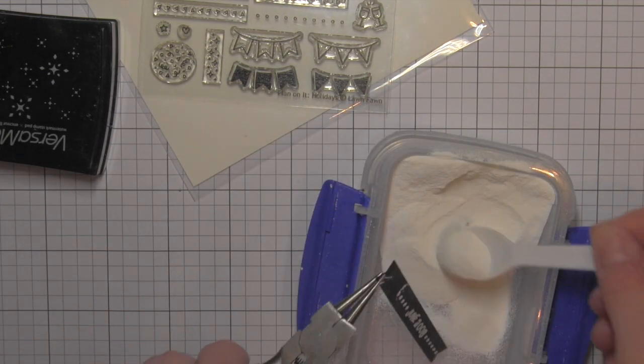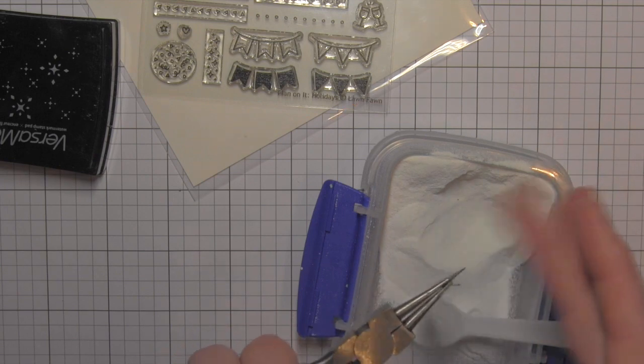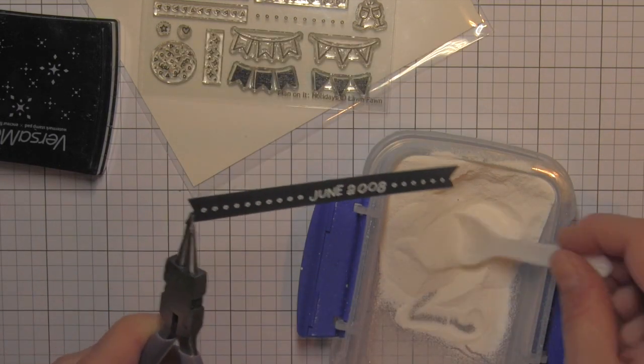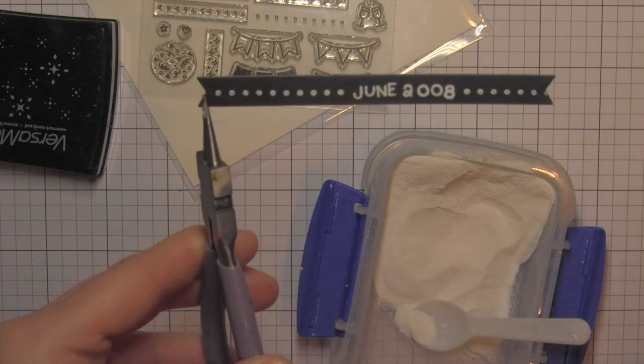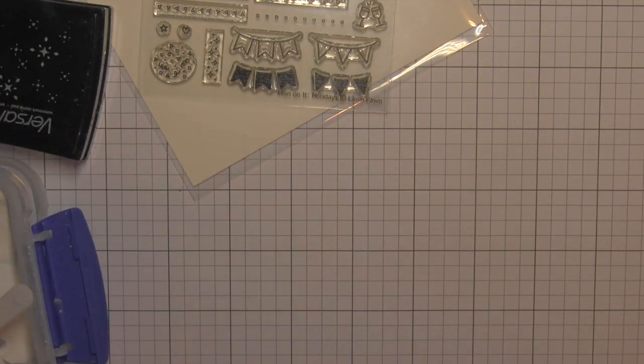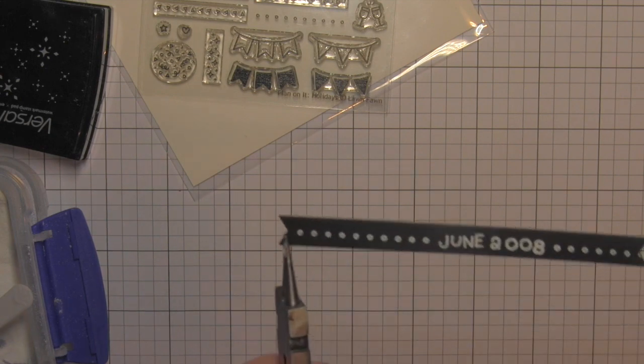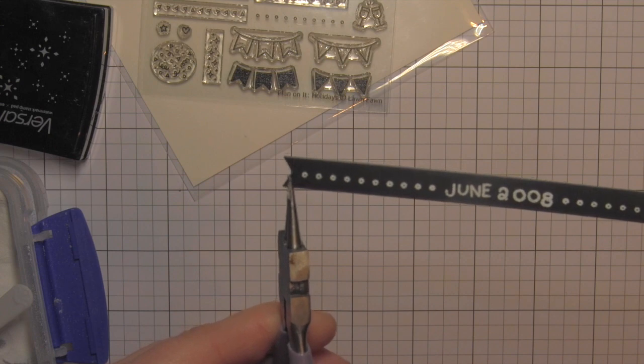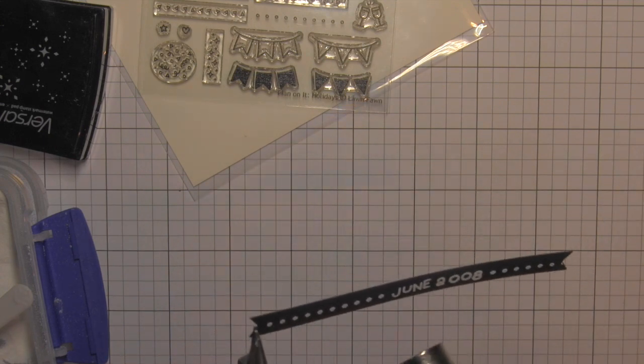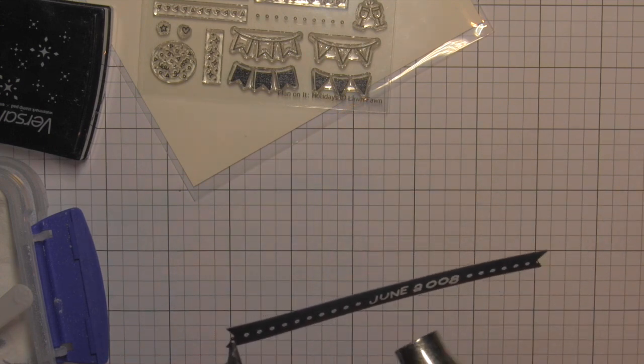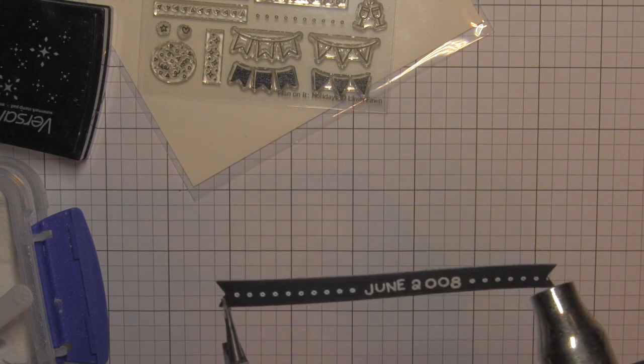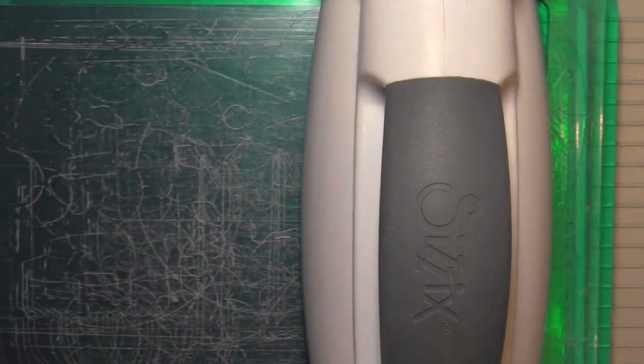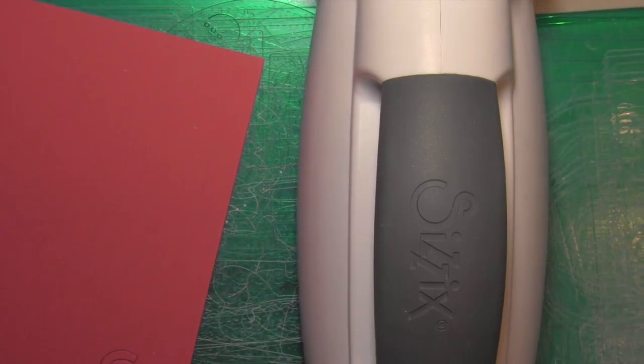I'm going to use some pliers here to hold this and keep my fingers out of the inked up date, then simply heat set this. This has some cute little dot detail and of course June 2008. This is going to be the little element that goes across the sunshine in the bottom right corner of the layout. I will also computer generate some journaling and print it right on the circle.